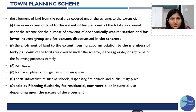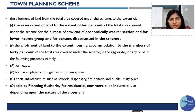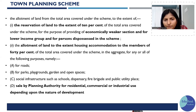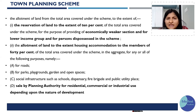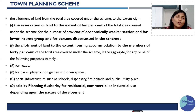Regarding land deduction: 10% of the total area must be reserved for the economically weaker section (EWS), lower income group, and persons disposed of in the scheme. The remaining 40% is divided among roads, parks, playgrounds, open spaces, social infrastructure, and land for sale by the planning authority. So a maximum of 50% is deducted from the total plot area: 10% for EWS/LIG and 40% for roads and social amenities.